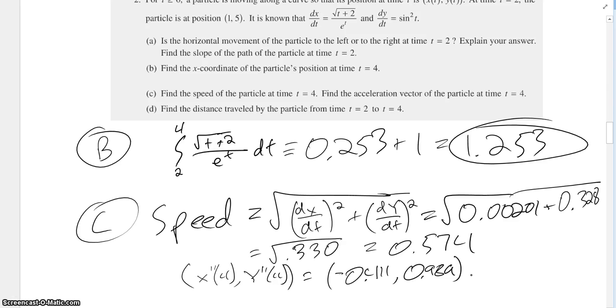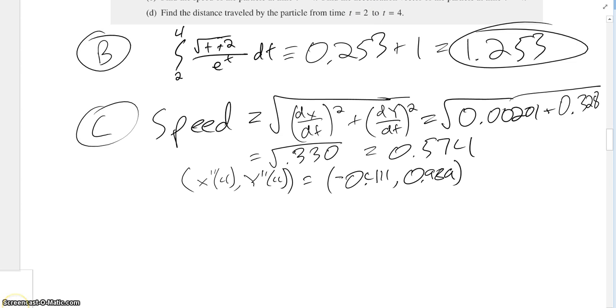And then d is find the distance traveled by the particle from time t equals 2 to t equals 4. And this is also kind of simple once you realize what you're supposed to do. It's really just the integral of the speed equation. But instead of plugging in your t equals 4 values, you're going to do it from 2 to 4. And this is, again, something you can do pretty easily under a calculator.